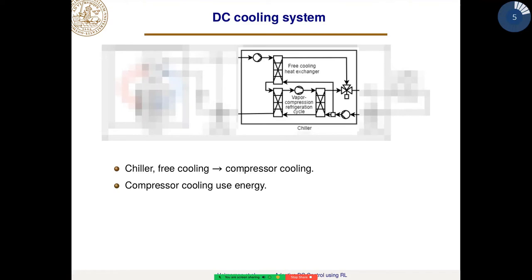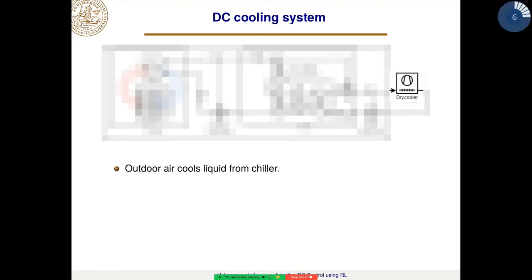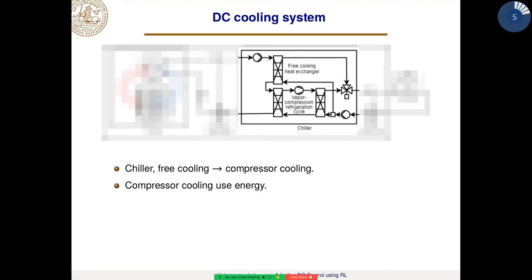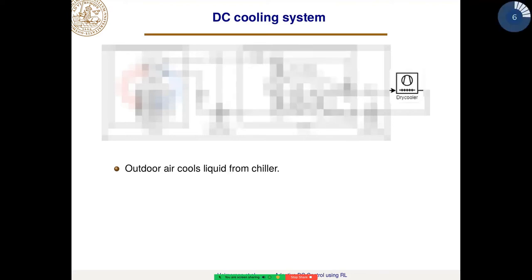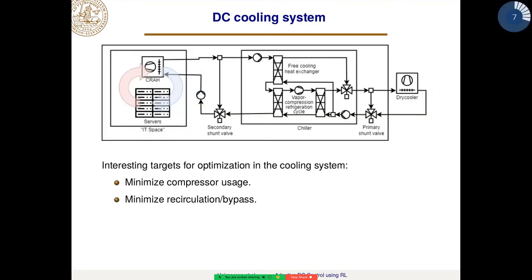Then we have the chiller, which has both a free cooling component and, if needed, a compressor that uses a lot of energy. So optimally, we want to avoid using the compressor. The free cooling uses the dry cooler outside, which cools liquid from the chiller using the outside air. So the interesting things to look at are minimizing compressor usage and minimizing recirculation mixing of the air in the IT space.